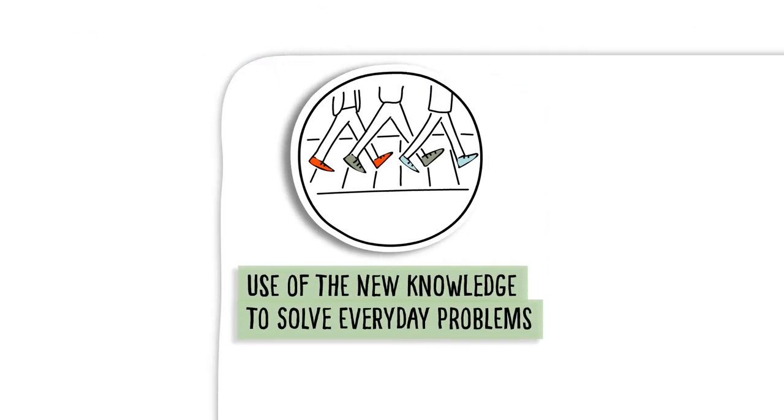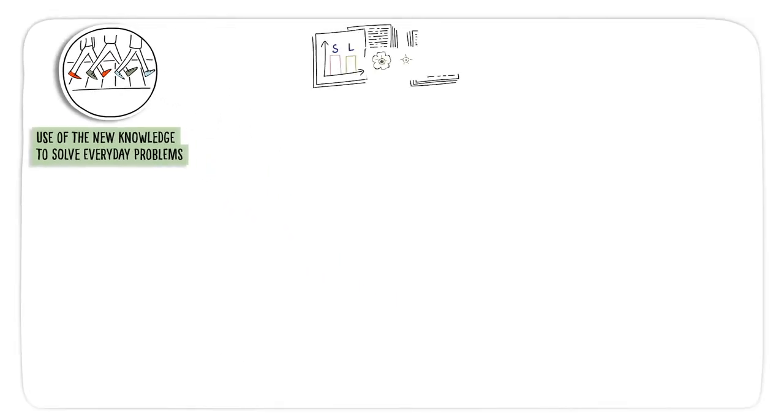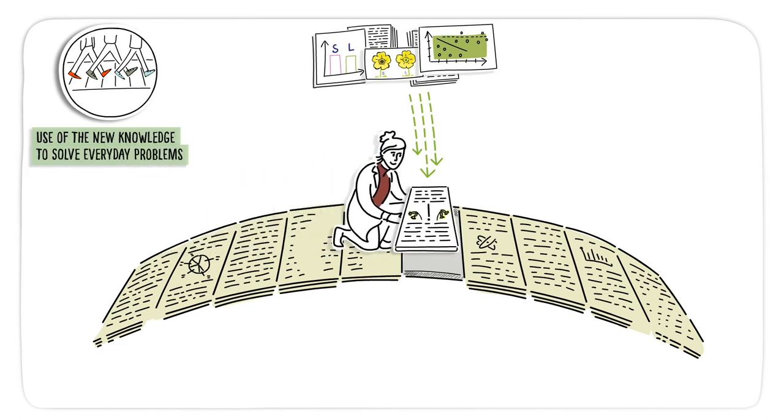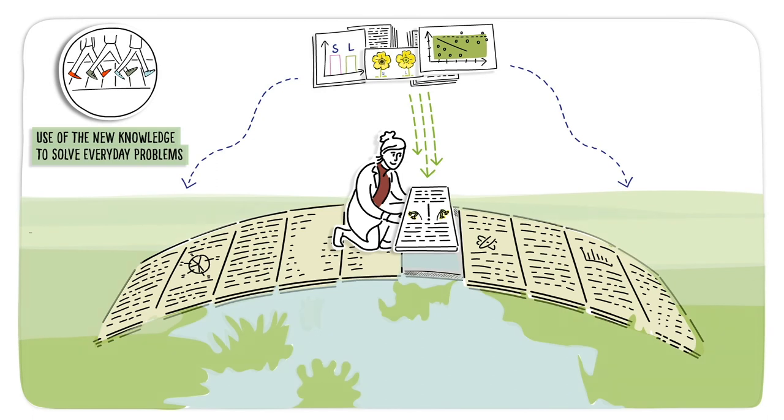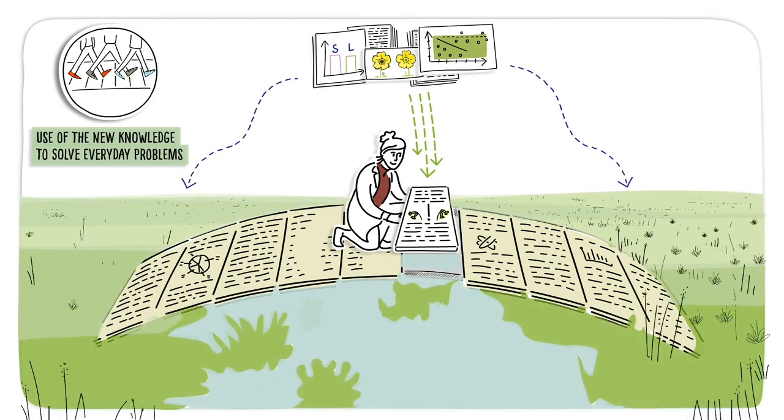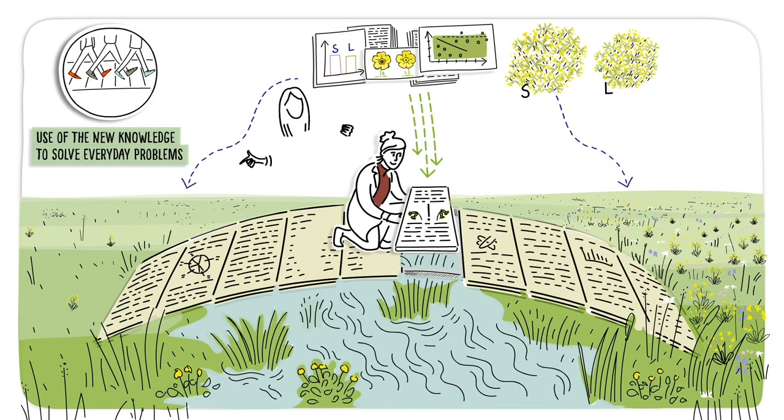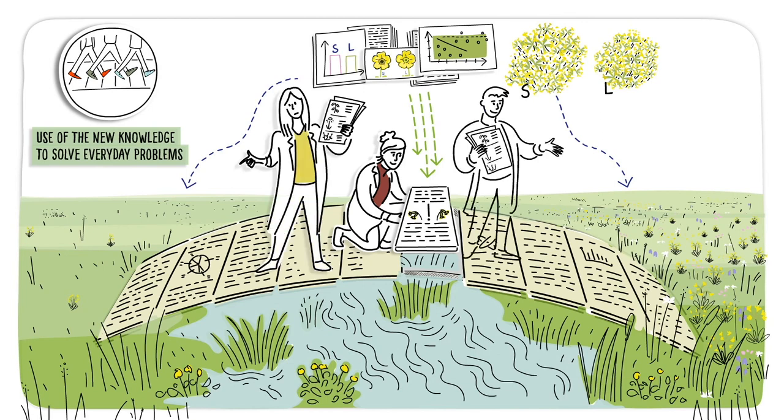Use of the new knowledge to solve everyday problems. Ideally, the results of the research article can be used to make decisions about our lives. For example, the cowslip data provides information on how the plant species inhabiting our biodiversity hotspots, meadows, are doing. The proportion of different types of cowslips helps predict the status of biodiversity at the observation site, before habitat loss forces the cowslips and other species out of the area.